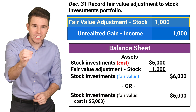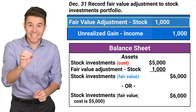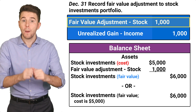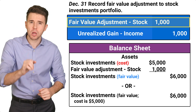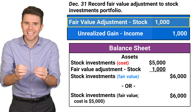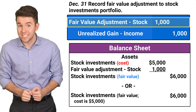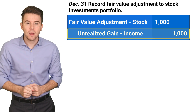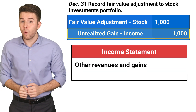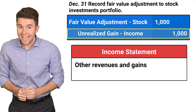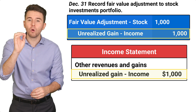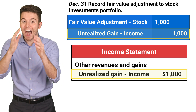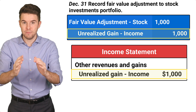We can alternatively report stock investments at the $6,000 fair value, noting the cost is $5,000. We report stock investments as either a current or long-term asset based on how long management plans to hold the stock and how easily it is to eventually sell the stock. On the credit side, the unrealized gain of $1,000 is reported in the Other Revenues and Gains section on the income statement.